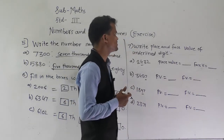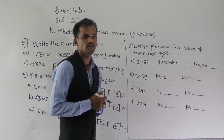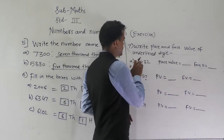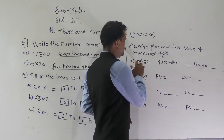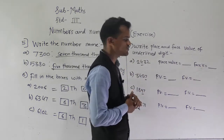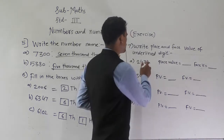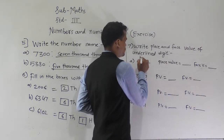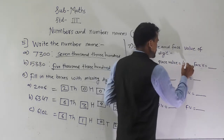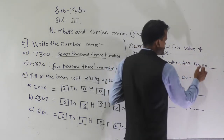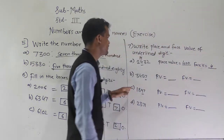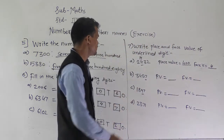Next: write the place value and face value of the underlined digit. Read this number — 2432 — and the underlined digit is 4. This 4 comes at the hundred place, so the place value of 4 is 400, and the face value does not change — it remains 4.